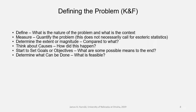Let's talk about defining the problem using the Craft text. First, define: what is the nature of the problem and what is the context? Second, quantify the problem — again, that doesn't necessarily call for esoteric statistics; descriptive statistics can suffice. Third, determine the extent or magnitude — you've measured it, but what does that mean compared to what? Then think about causes: how did this happen? Then start to set goals or objectives — what are some possible means to the end? And finally, determine what can be done and what is feasible. Those last two are things you can start thinking about, but not necessarily put in your problem statement right away.